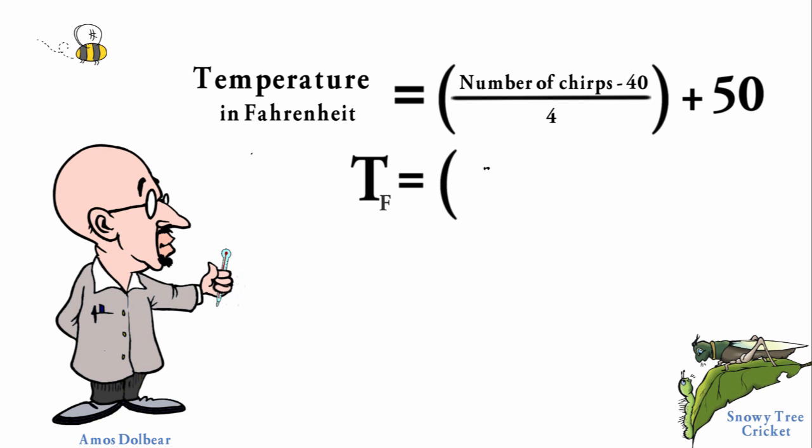Similarly I will use the variable N to represent the number of chirps. So Daubert would express the relationship like this: T is equal to N, the number of chirps, minus 40 divided by 4, plus 50.